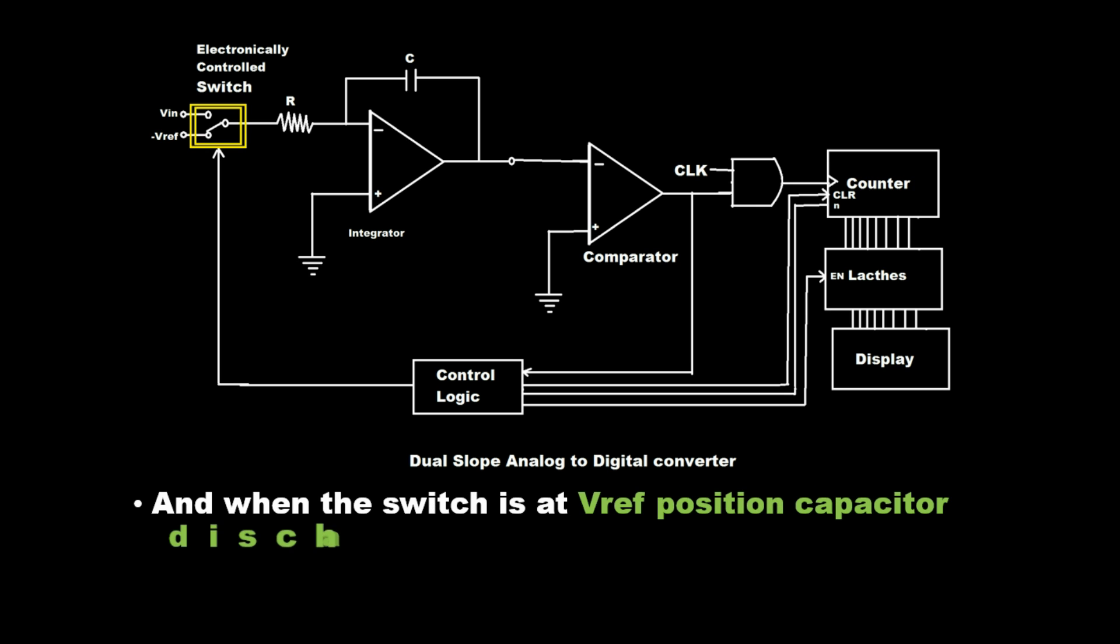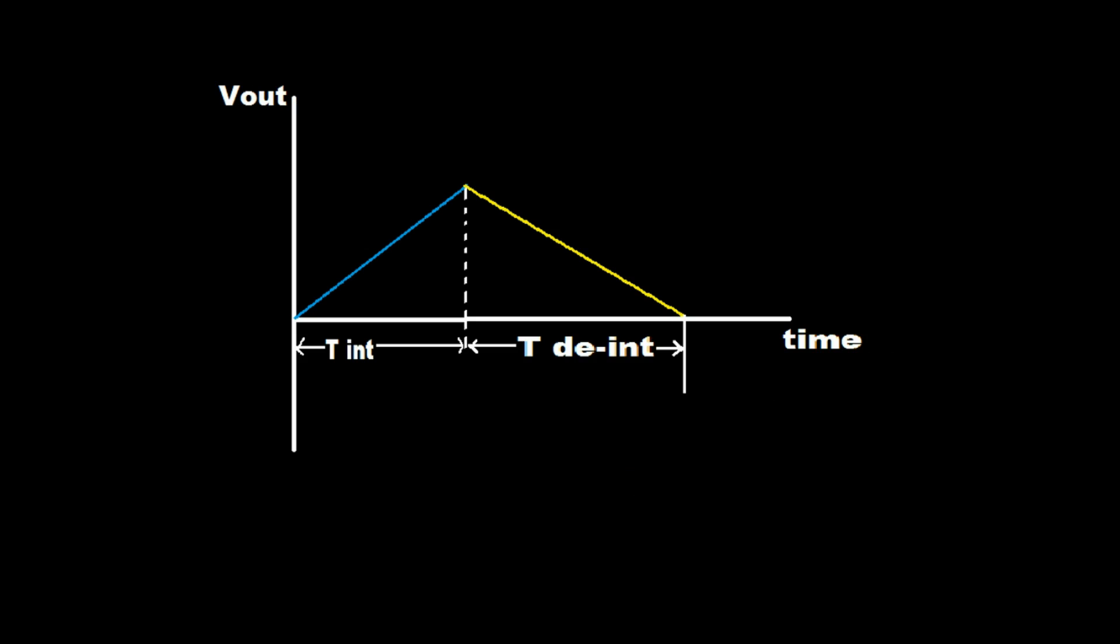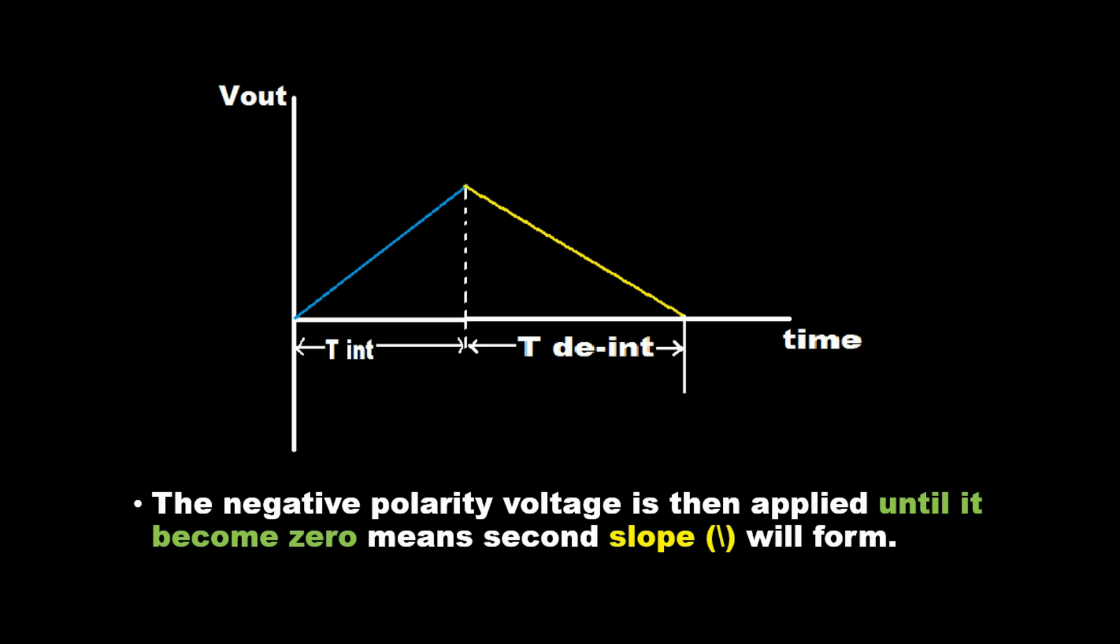And when the switch is at VREF position the capacitor discharges, and the discharging time of the capacitor is more. One slope is made due to unknown voltage. The negative polarity voltage is then applied until it becomes zero, meaning a second slope will form.